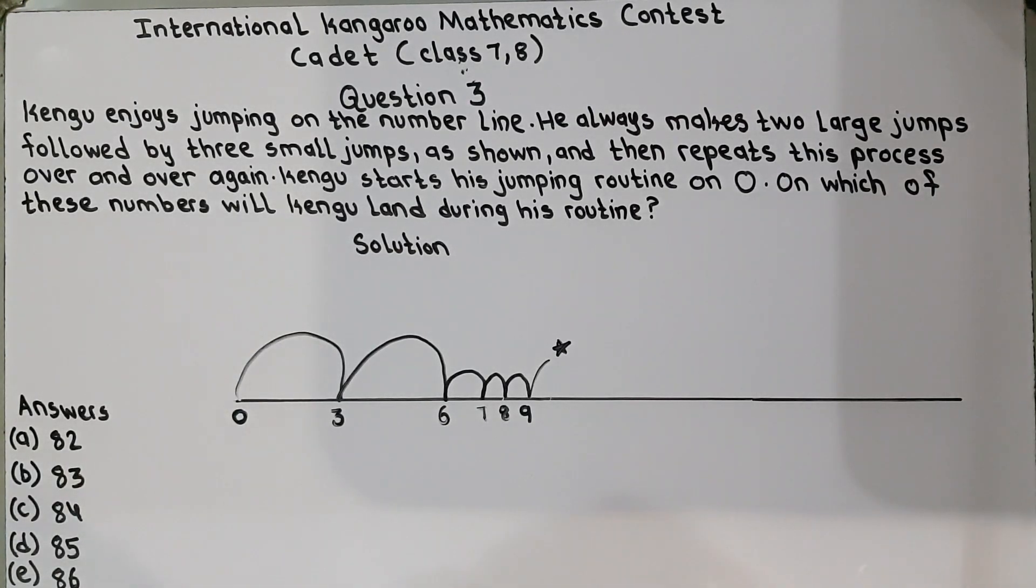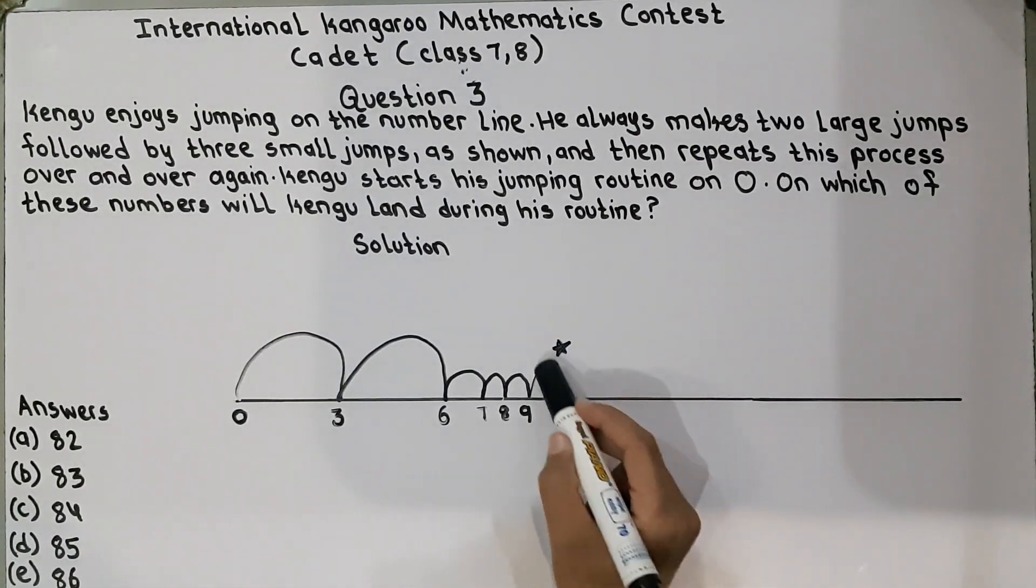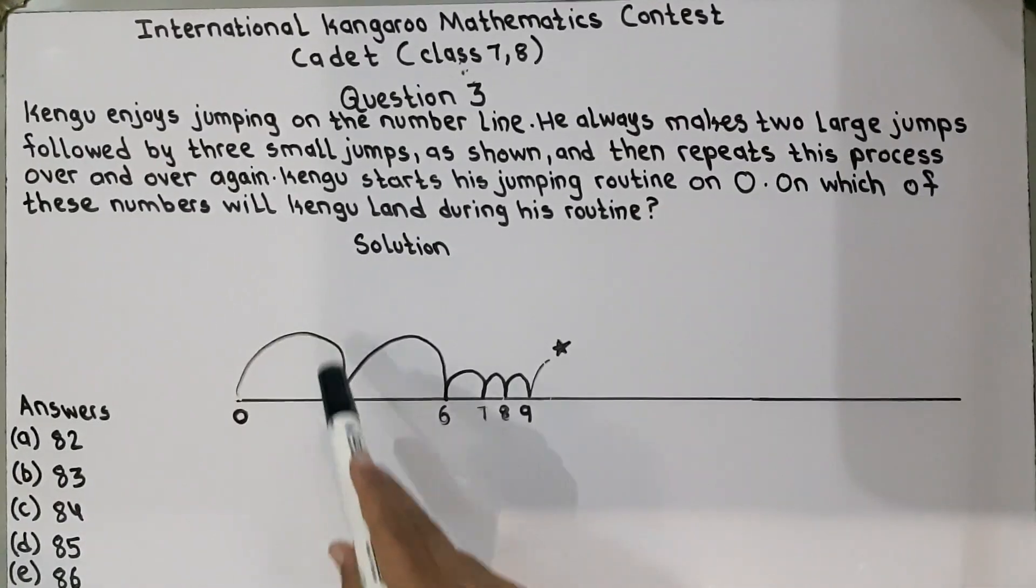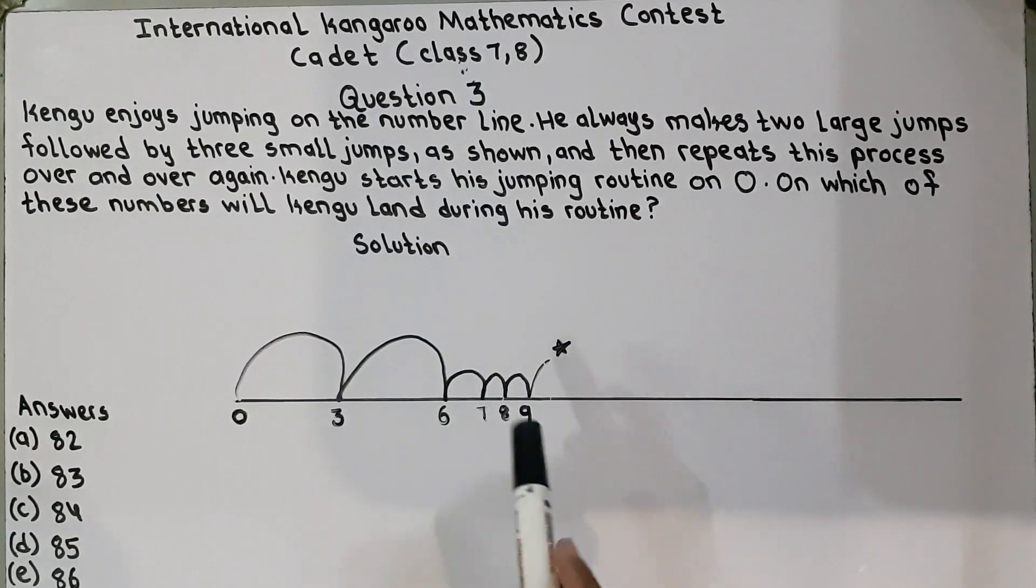So the question is Kangaroo enjoys jumping on the number line. This star is representing the kangaroo and he jumps on the number line. First he makes two large jumps and then he makes three smaller jumps.